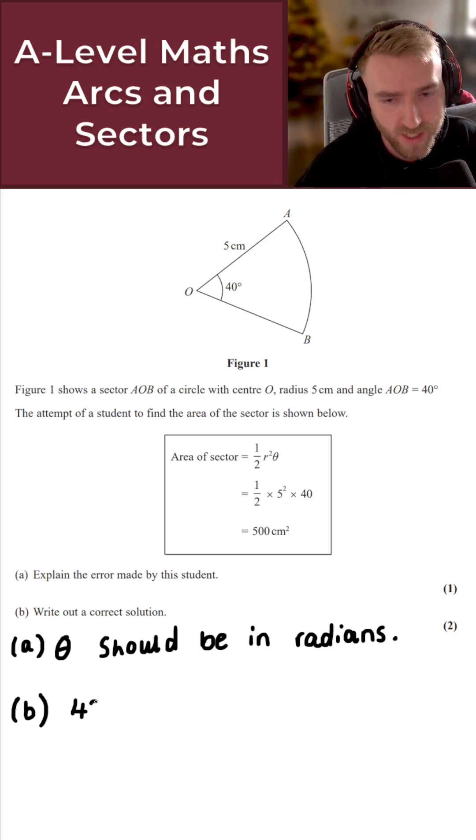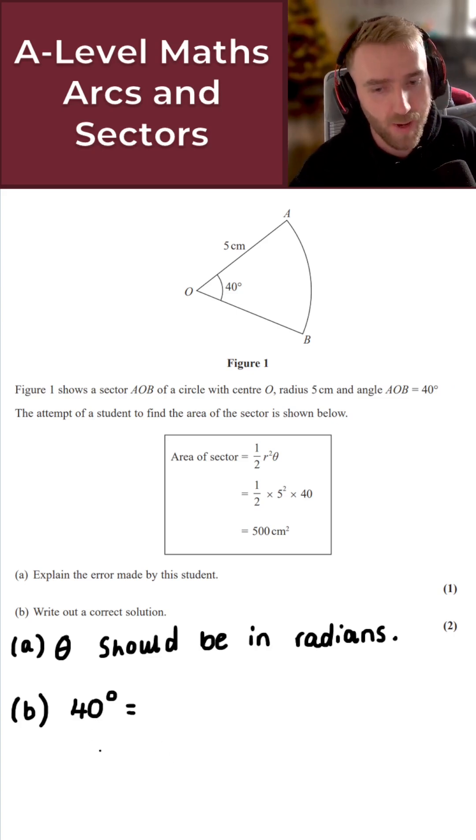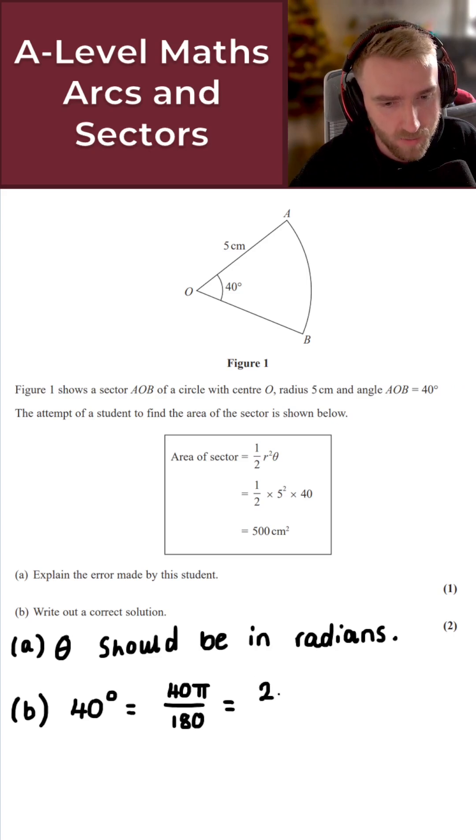So 40 degrees here is equal to—we times this by pi and divide by 180. So I get 40 pi over 180. And that's just the same then as 20 pi over 90, which if we just divide top and bottom by 10 here, we get 2 pi over 9. So this is 2 pi over 9 radians.